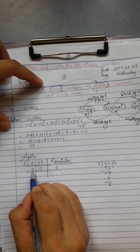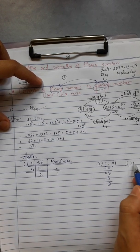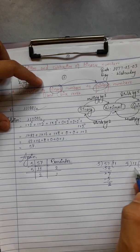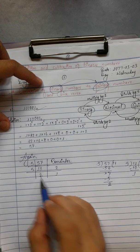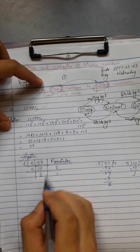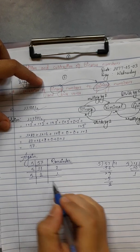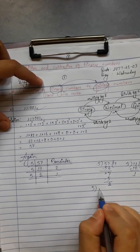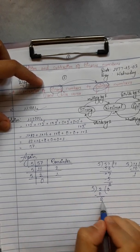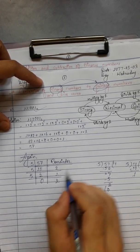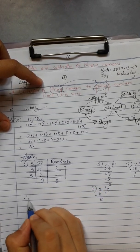Continuing the division: 57 ÷ 5 gives quotient 11, remainder 2. Then 11 ÷ 5 gives quotient 2, remainder 1. Then 2 ÷ 5 gives quotient 0, remainder 2. Reading remainders from bottom to top gives the quinary digits.